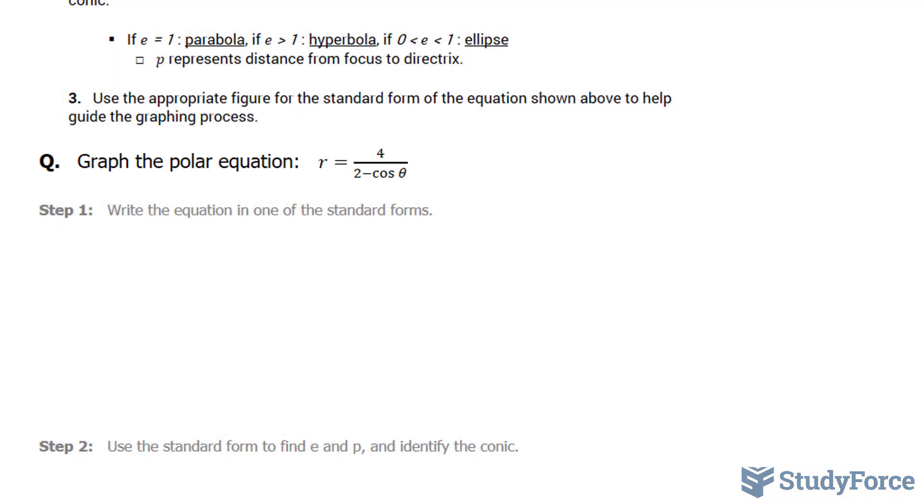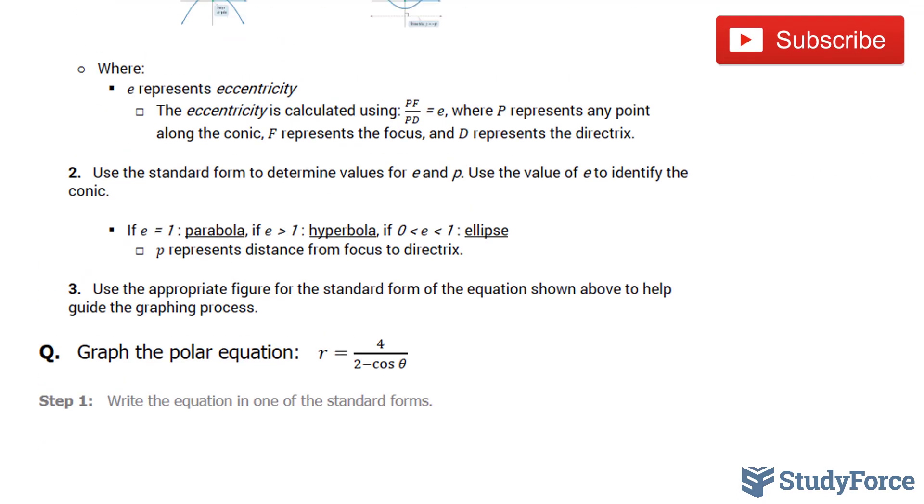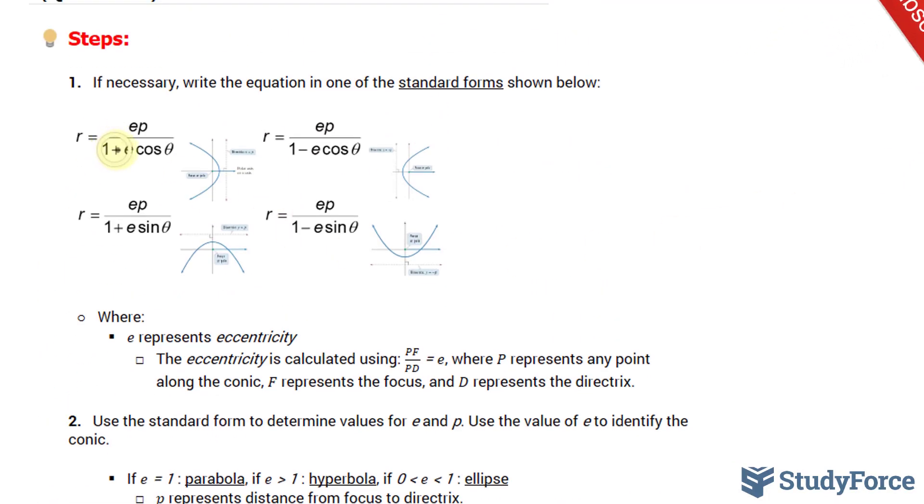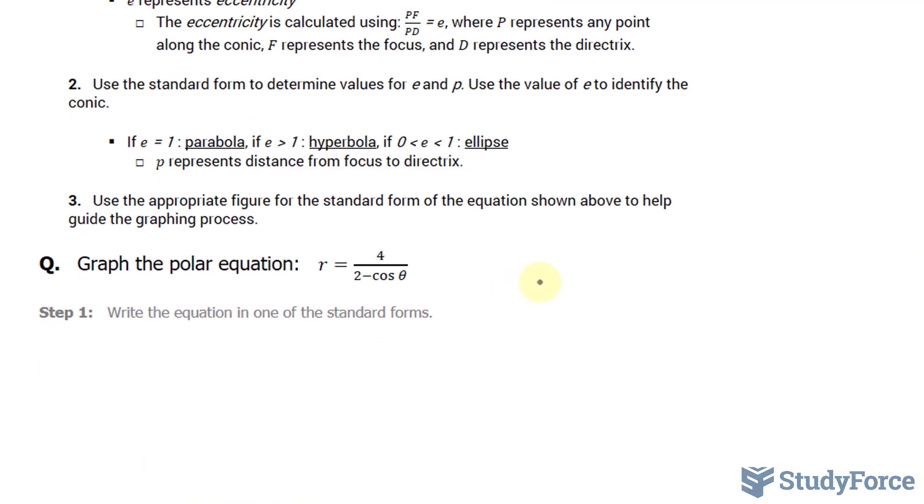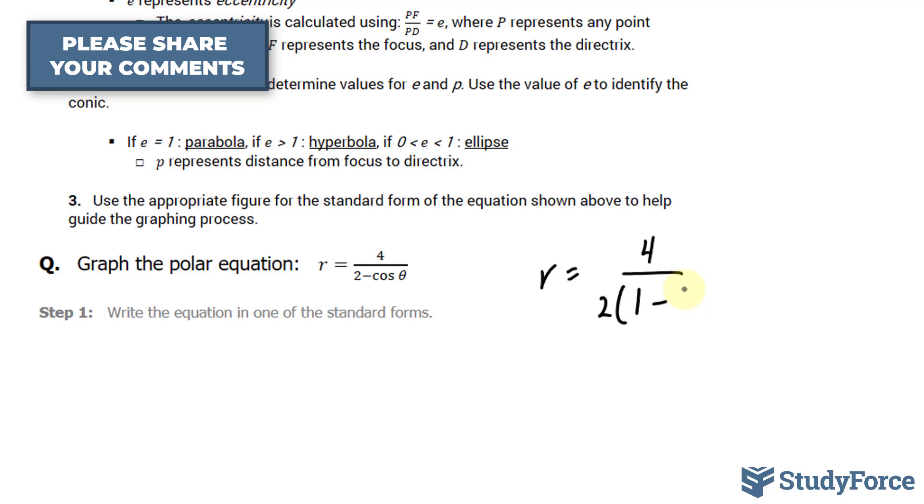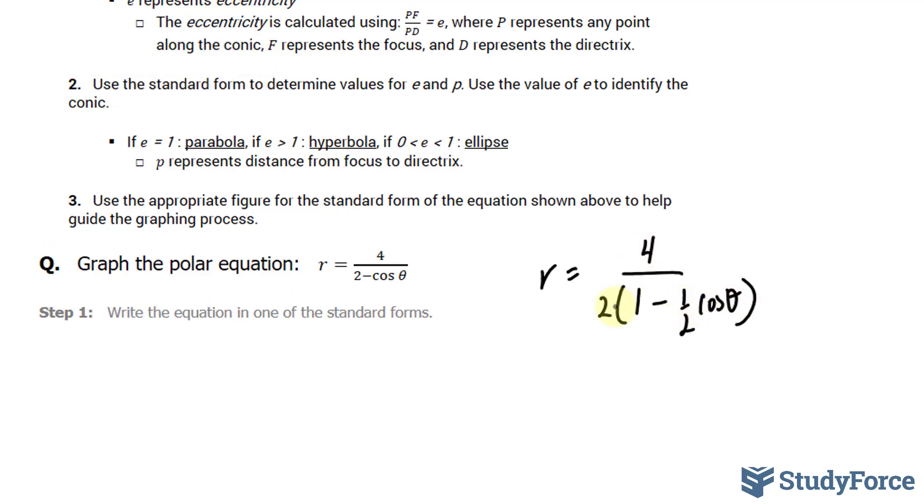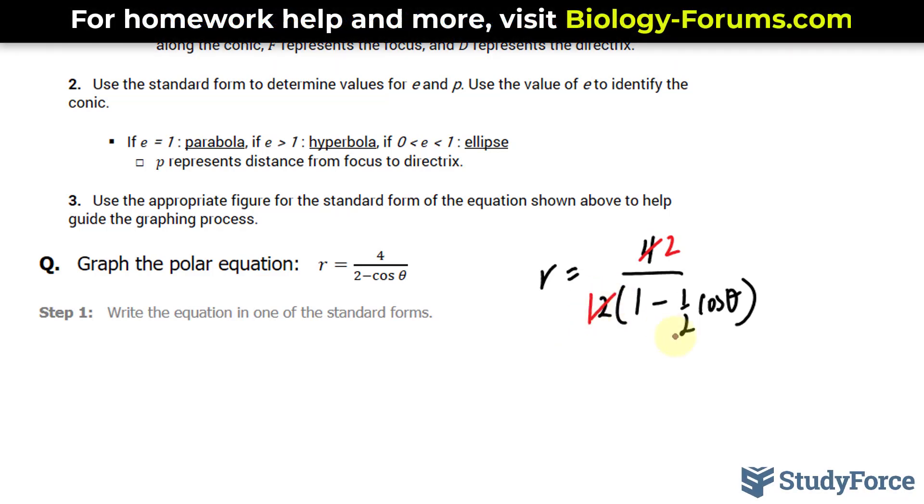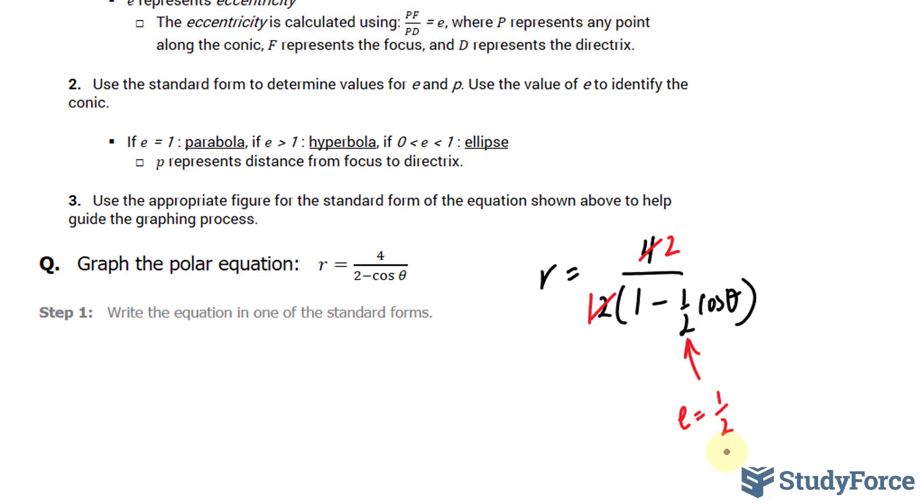The first one said write the equation in standard form, and what we want to do is make this 2 into a 1 because all standard form equations were 1 plus minus e cosine sine. So let's go ahead and do that. We have r equals 4 over 2, and I'll factor out a 2, where this becomes 1 minus 1 half cosine theta. 4 over 2 is equal to 2, and e is equal to 1 over 2, which is between 0 and 1. Therefore, we're dealing with an ellipse.